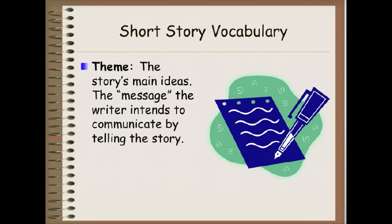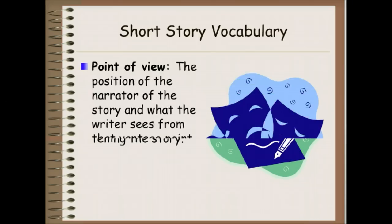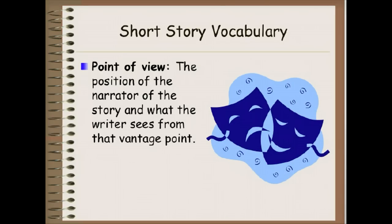Theme is the story's main ideas, the message the writer intends to communicate by telling the story. Point of view is the position of the narrator of the story and what the writer sees from that vantage point. There are several different types of point of view that we'll be reviewing later on as well.